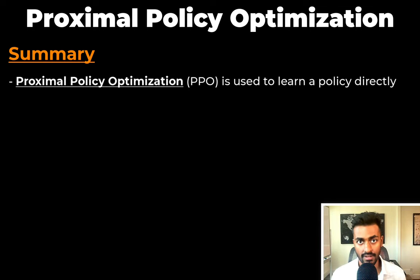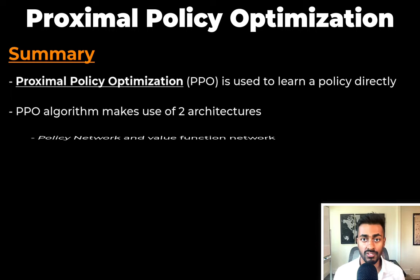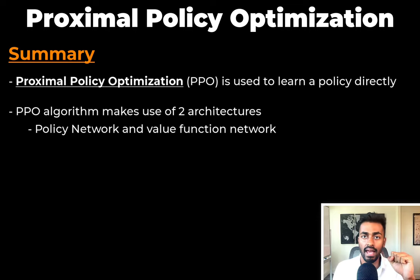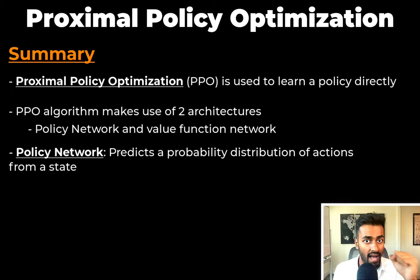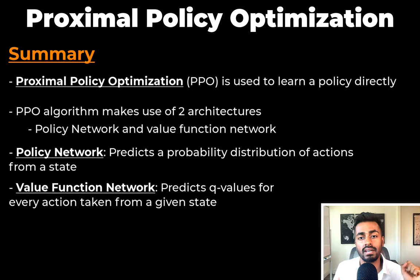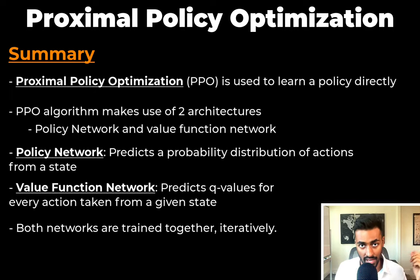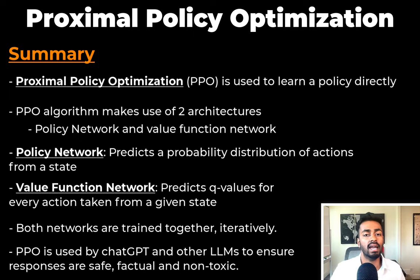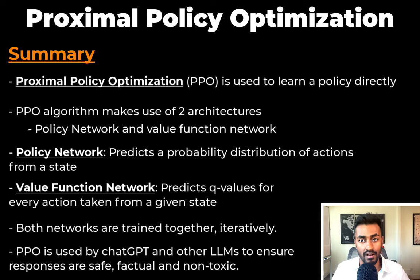Proximal policy optimization is used to learn a policy directly. The PPO algorithm makes use of two architectures: a policy network and a value function network. The policy network predicts a probability distribution of actions, whereas the value function network predicts Q values for every action taken from a state. The PPO algorithm involves training both networks iteratively and together. As a bonus tidbit: this algorithm is actually used by ChatGPT and other large language models today to ensure that their responses are safe, factual, and non-toxic.